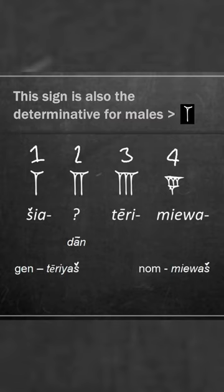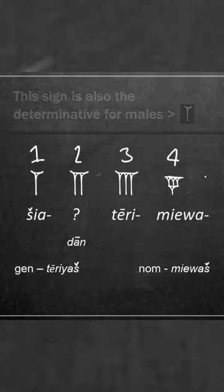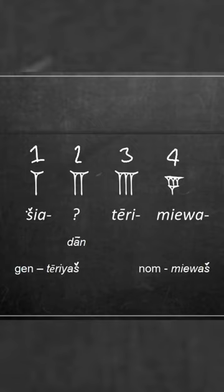For number four we begin a new row, and I'll let you use your imagination — you can probably guess how number five would be represented. Now in terms of the sonic representation of these signs, it becomes a little bit more difficult.